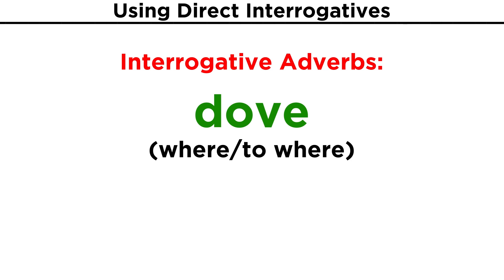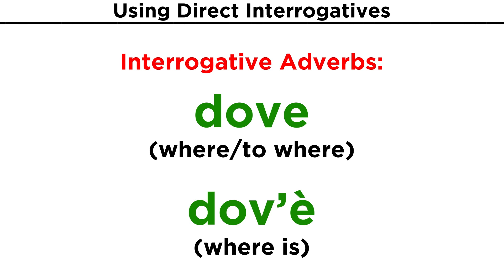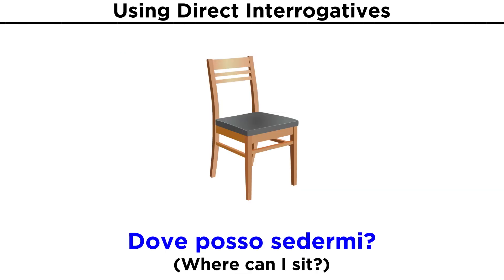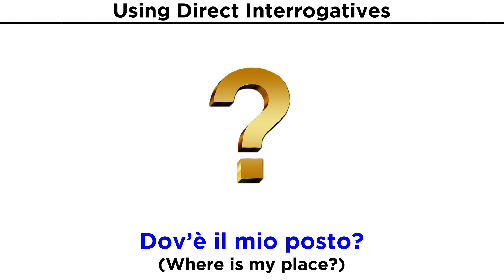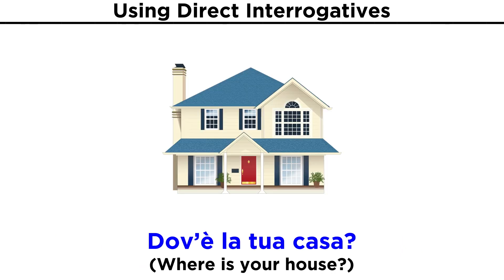Now we must ask where. This will require the word dove, with stress on the o and a closed vowel sound. Dove can be used for both where and to where. Also, just like come, it can be used with the verb to be, which shortens dove to become dov'è. Dove posso sedermi? Dove hai parcheggiato la macchina? Dov'è il mio posto? Dov'è la tua casa?